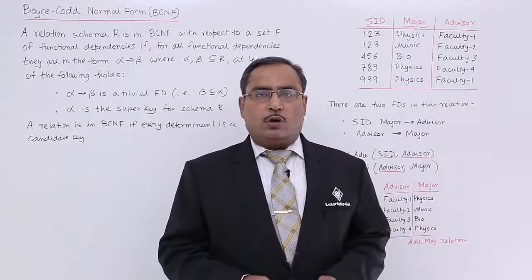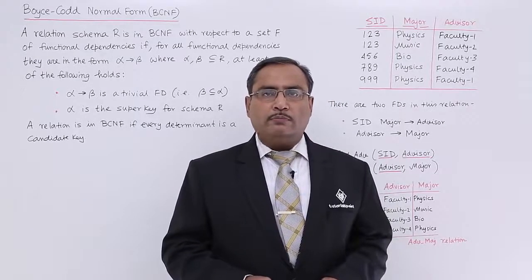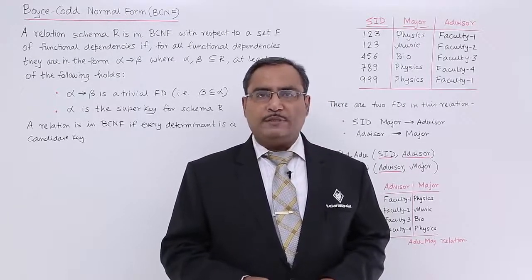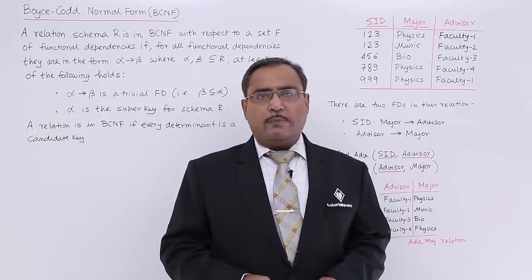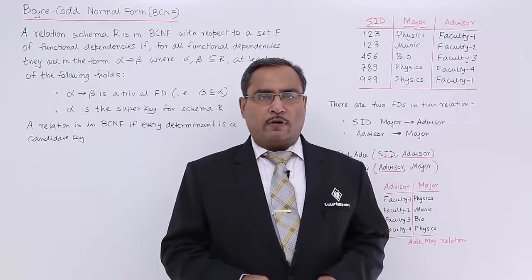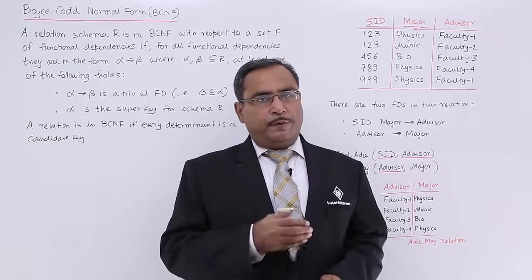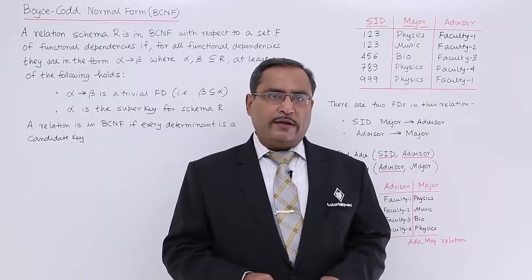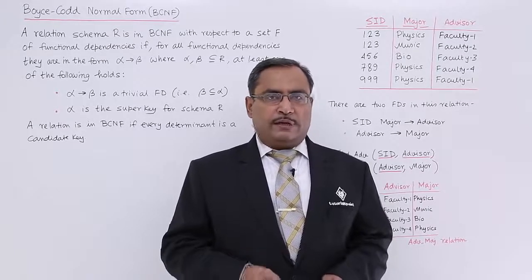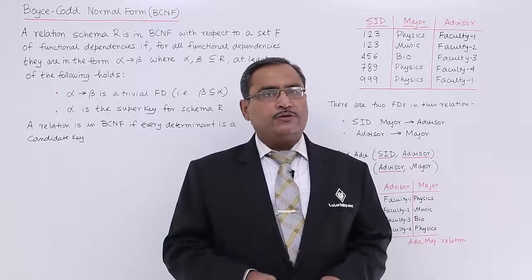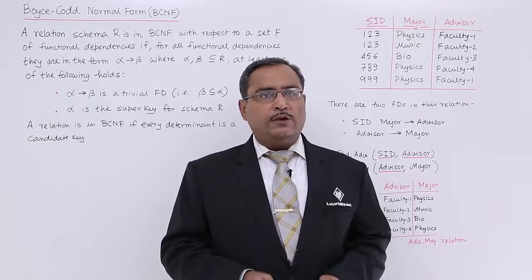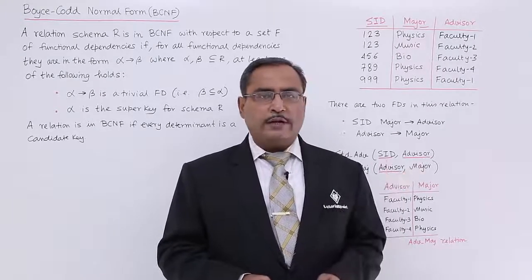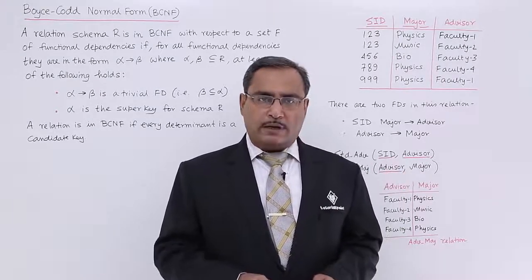We are discussing Boyce-Codd Normal Form, in short called BCNF. In the previous videos, we have discussed 1NF, 2NF, and 3NF. This video is also a continuation of them, and you should watch all those videos earlier for better understanding.